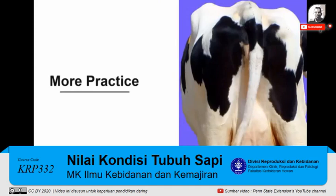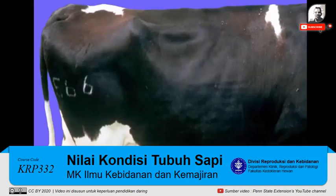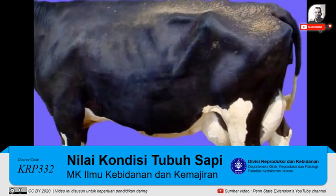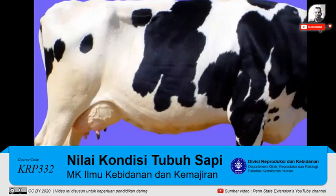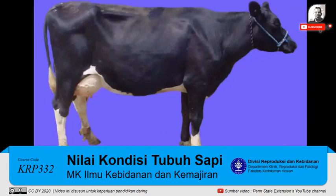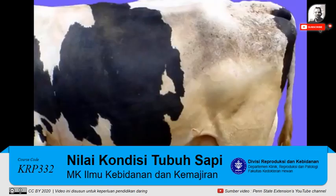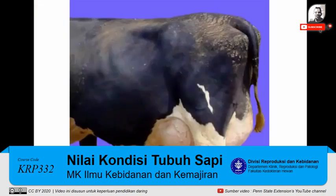Since this first decision can be a little difficult, here are a few more examples. The instructor shows each cow, pauses to allow time to decide, then traces the angle and provides the answer. The examples demonstrate V angles for thinner cows and U angles for cows with more condition, helping viewers become more comfortable with the first step of this process.